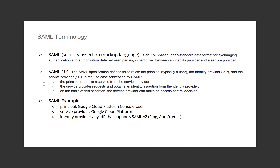As a SAML 101, think of three components in this SAML exchange. There's the principal — typically a user trying to get access to an application — and there's an identity provider. The principal requests a service from the service provider, so access to an application. The service provider requests and obtains an identity assertion from the identity provider. Basically, we want to authenticate this user, and based on that identity assertion, the service provider will make an access control decision — whether or not to let the user access the app.